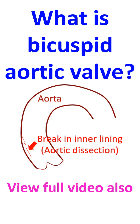Very rarely, the tear can extend through and through the aortic wall. This is called an aortic rupture, which could be immediately fatal due to severe blood loss. Both these conditions require very urgent surgery for saving life. Fortunately, they are rare complications.